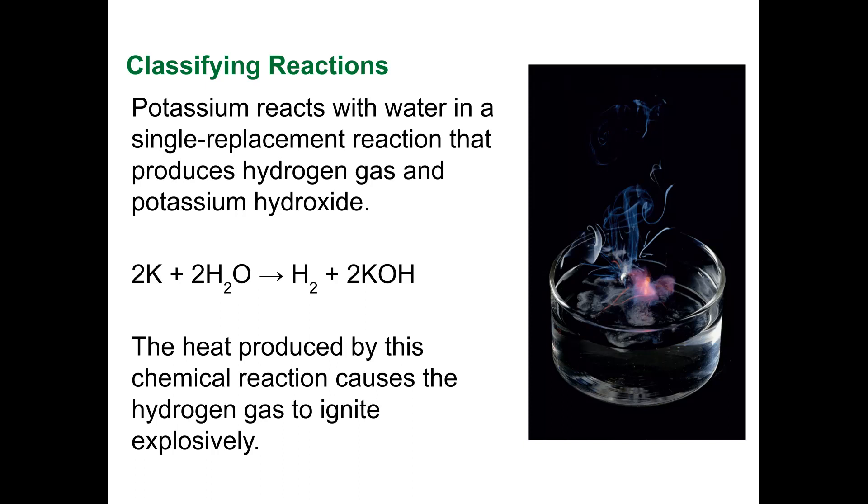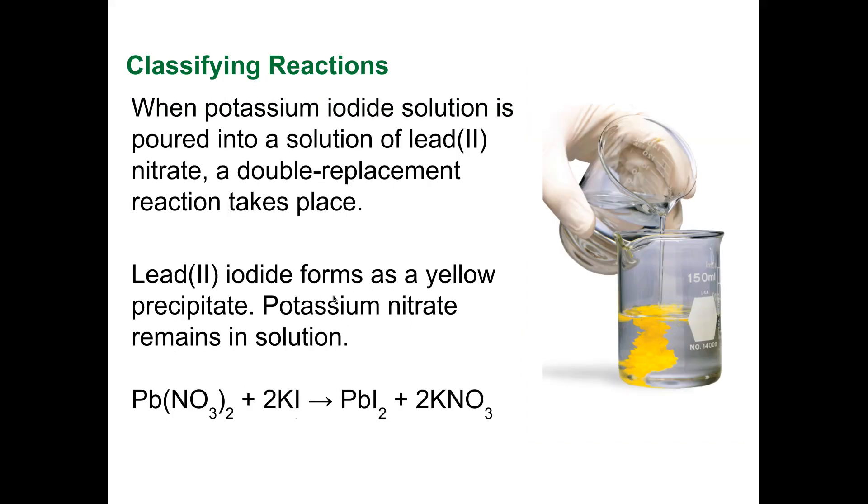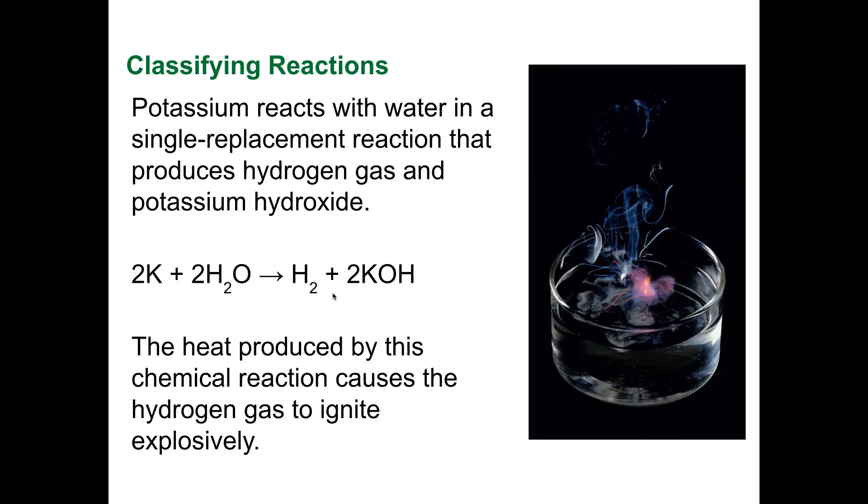Potassium reacts with water in a single replacement reaction that produces hydrogen gas and potassium hydroxide. The potassium replaces the hydrogen. So you have water here, and then the potassium replaces the hydrogen. So now you have hydrogen gas and then potassium hydroxide. The heat produced by this chemical reaction causes the gas to ignite explosively.